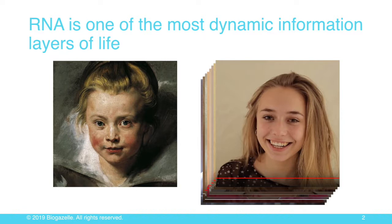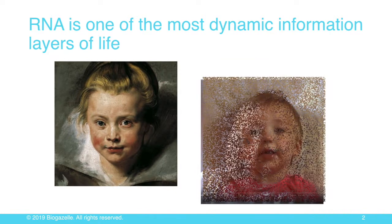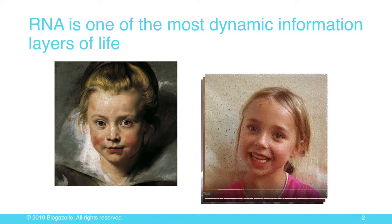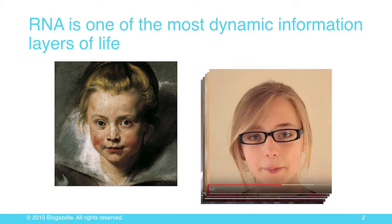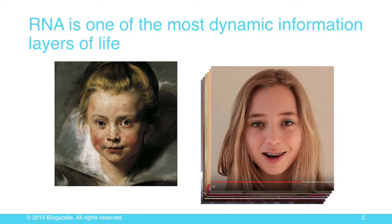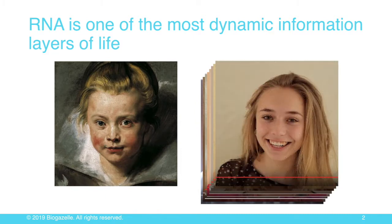We truly believe in the power of RNA as it accurately reflects cellular states. I sometimes refer to DNA as a static painting — here this is Clara, the five-year-old daughter of Pieter Paul Rubens, a famous Flemish painter — and to RNA as real-time still images from a video. A father documented his daughter Lotte every day with a few snapshots, available on YouTube. While the DNA of the girl has not changed over time, her expression clearly has. RNA is probably one of the most informative and dynamic information layers to study.